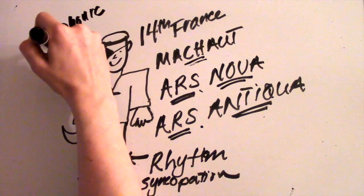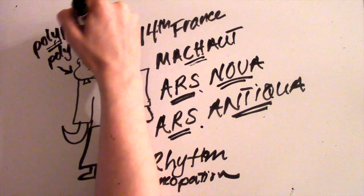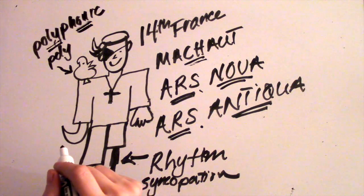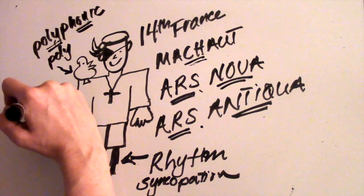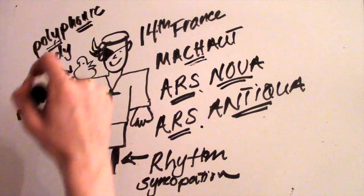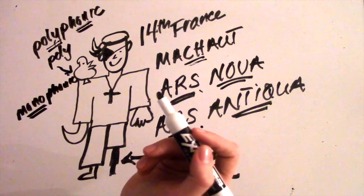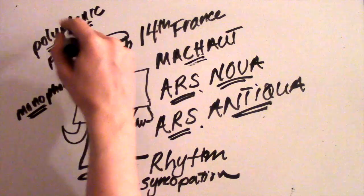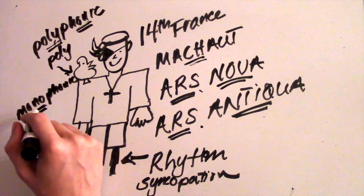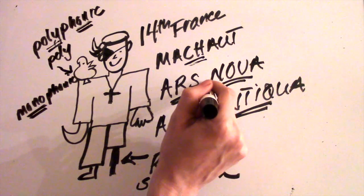Polyphonic, Polly meaning Polly, phonic of course meaning sound. So we're seeing multiple lines happening simultaneously and that this is replacing what was happening before which is monophonic music which is of course mono meaning one meaning single line melody. So we see the use of polyphonic changing out the use for monophonic as a characteristic of the Ars Nova.